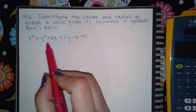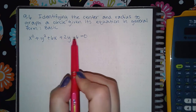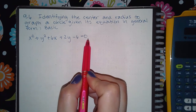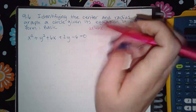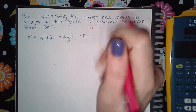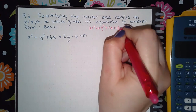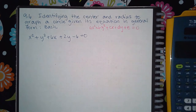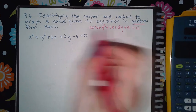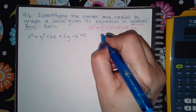General form looks like this: you have your x squared, your y squared, your x's, your y's, and a constant equal to zero. That is the general form — ax squared plus by squared plus cx plus dy plus e equals zero. It has to be in that form to be considered general form.